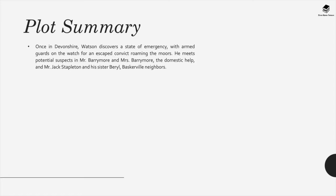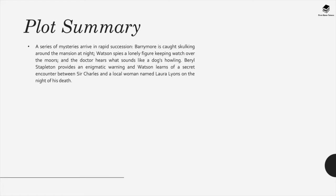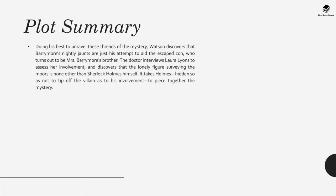Once in Devonshire, Watson discovers an estate of emergency, with armed guards on the watch for an escaped convict roaming the moors. He meets potential suspects: Mr. Barrymore and Mrs. Barrymore, the domestic help, and Mr. Jack Stapleton and his sister Beryl, Baskerville neighbors. A series of mysteries arrive in rapid succession. Barrymore is caught skulking around the mansion at night. Watson spies a lonely figure keeping watch over the moors, and the doctor hears what sounds like a dog's howling. Watson discovers that Barrymore's nightly jaunts are just his attempt to aid the escaped convict, who turns out to be Mrs. Barrymore's brother.